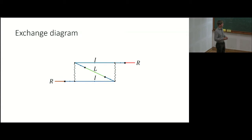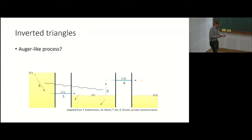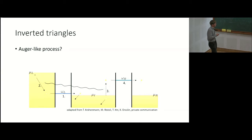How about the inverted triangles? Relatively early in the project, our colleagues from ETH suggested the following process: first an electron escapes from the emitter into the intermediate region, leaving behind a hole in the source. This hole can recombine with another source electron, and the recombination energy can be transferred to the intermediate region, where an electron can be excited to an energy higher than the energy of the emitted electron.